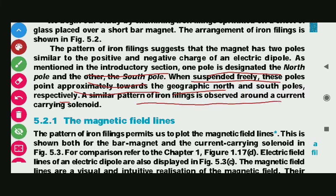A similar pattern of iron filings is observed around a current-carrying solenoid, as we have seen in the previous chapter. The pattern around the bar magnet and the solenoid are comparable to each other.